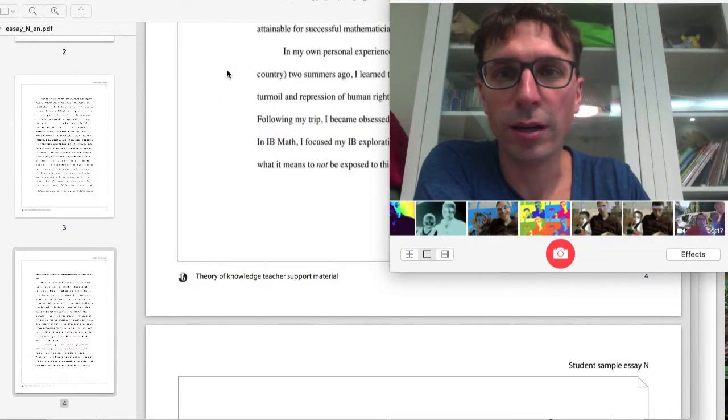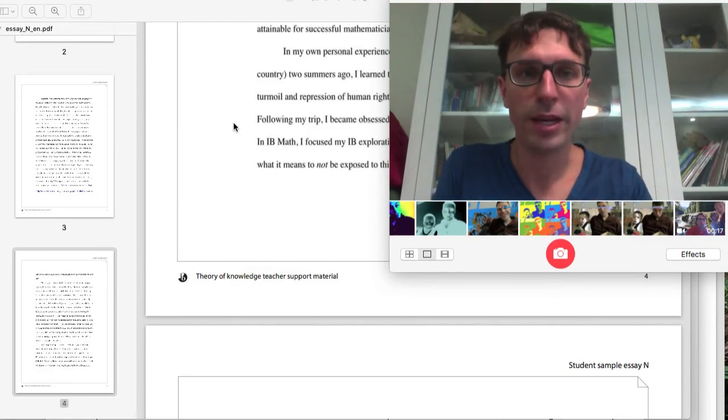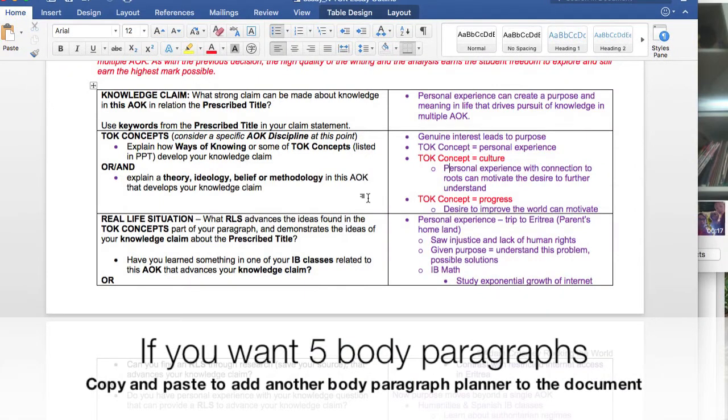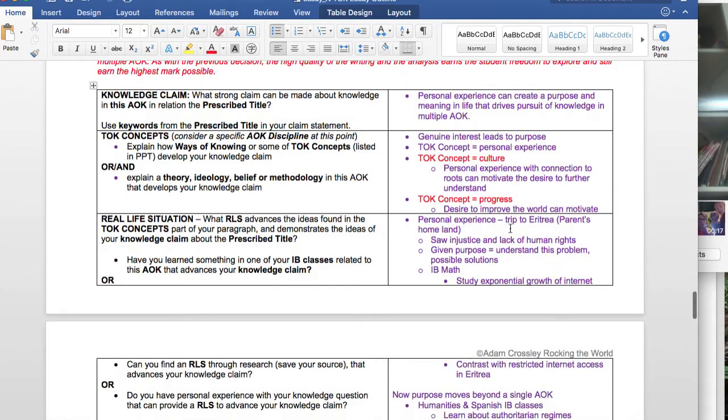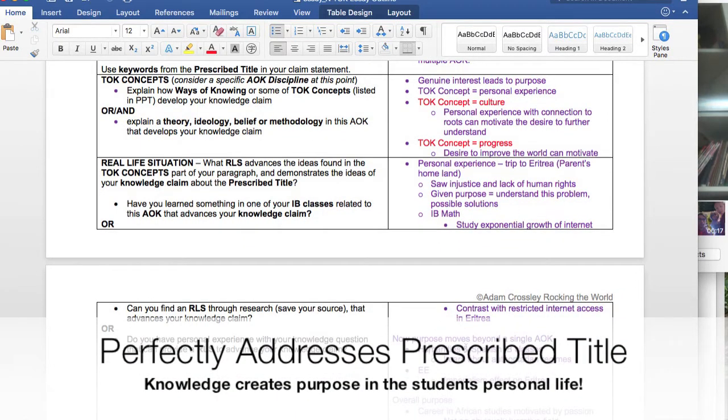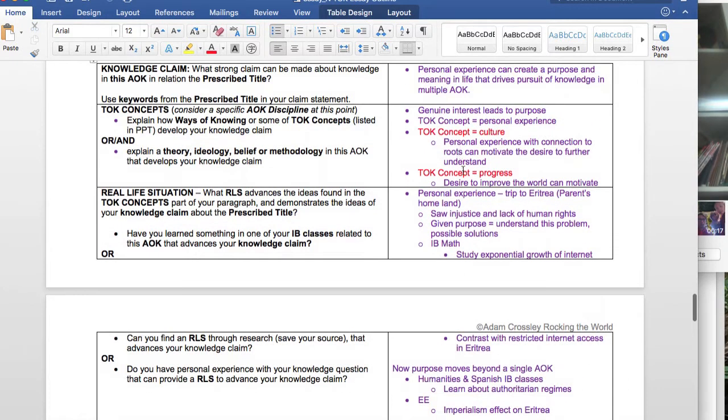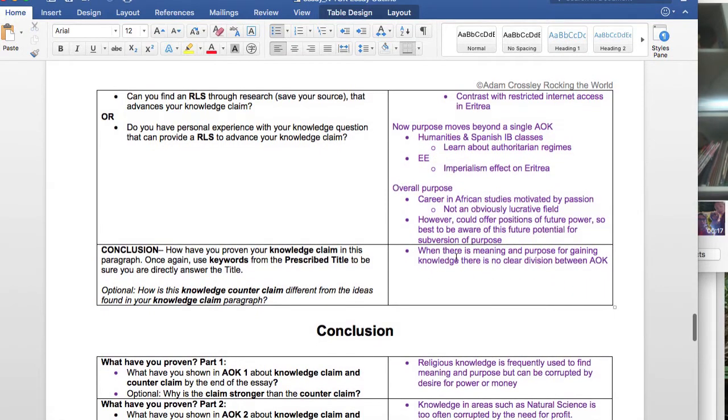In this final body paragraph, the student explores their own journey through multiple AOK and how a personal experience gave them meaning and purpose. A very creative idea. This is actually the fifth body paragraph, so I copy and pasted the part of the planner to create space for it, as you can do if you're a student and you want to write a fifth body paragraph. Their personal experience was their trip to Eritrea, which is their homeland. It implies a connection to culture that they don't say, but it's very clearly in there. And also this idea of progress, that their desire to improve the world motivates them. And then they talk about how it led them to study their math, led them to study things in their humanities, in their Spanish, in their EE, and created this overall purpose in their life, this personal experience that crossed multiple AOKs. A really sophisticated final paragraph addressing meaning and purpose.